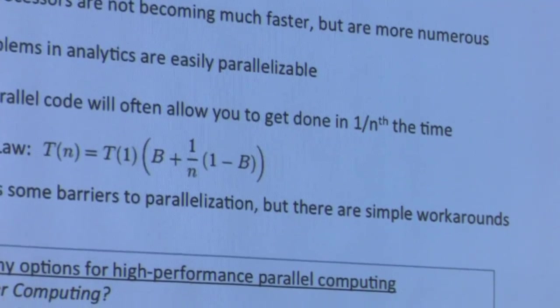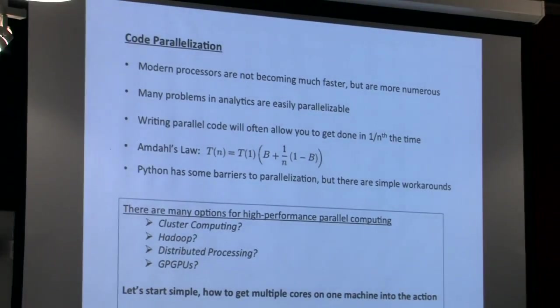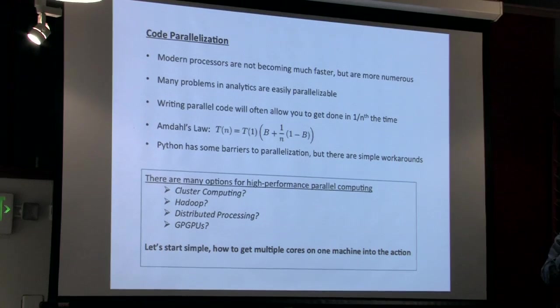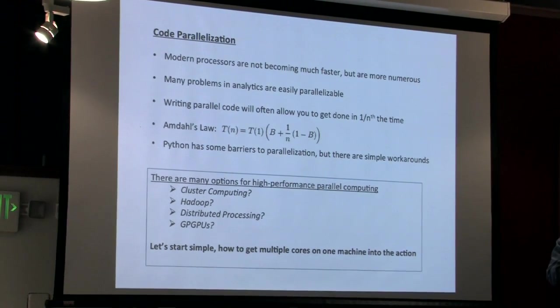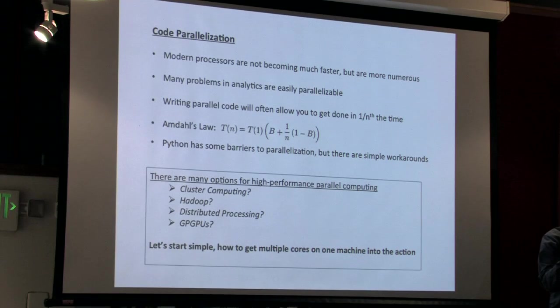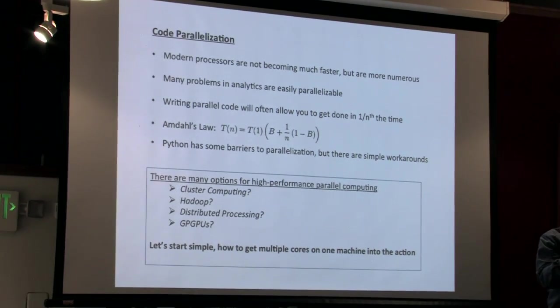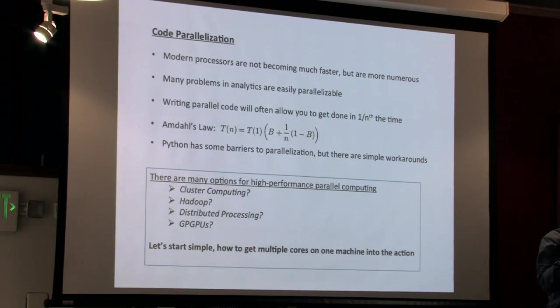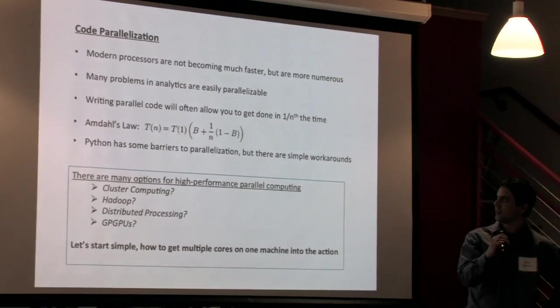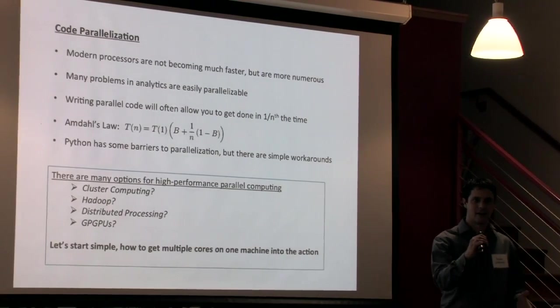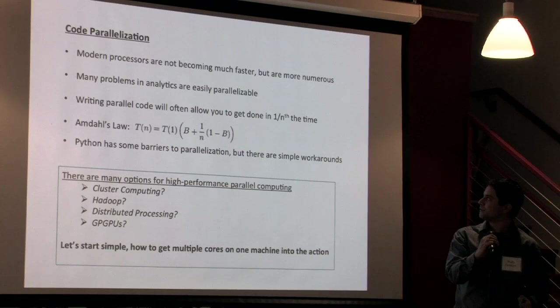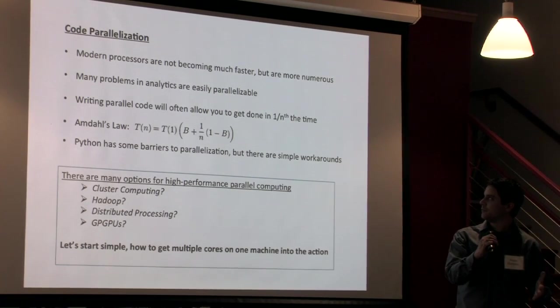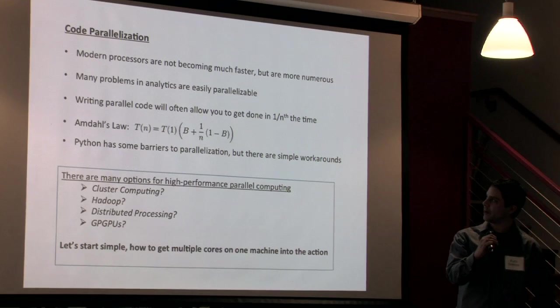So let's talk about code parallelization. One thing you might have noticed if you use computers at all in your work is that modern processors are not becoming much faster but they are becoming more numerous on basically all computers. There's a time when the clock rates on computers were following sort of a Moore's law progression that's really not happening anymore. Instead what we're getting are more cores on a given chip and so if you want to get the most out of your code you really have to write code that can utilize multiple cores. Now the good news is that many problems in analytics that you're probably facing are very easy to parallelize.